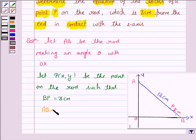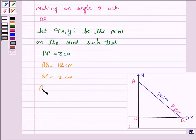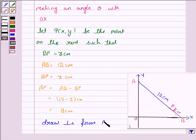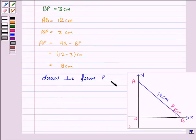AB is 12 cm and BP is 3 cm. So AP is equal to AB minus BP, that is 12 minus 3 cm, that is 9 cm. Now we draw perpendiculars from P, PQ and PR on the coordinate axis.